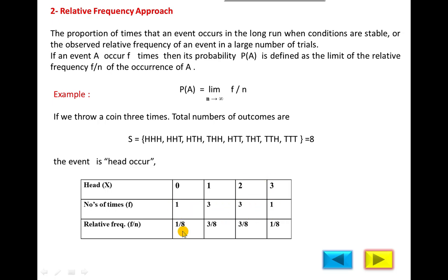If you divide the frequency by the total number of outcomes — 1+3+3+1 = 8 — you get the relative frequency or probability: 1/8, 3/8, 3/8, and 1/8. So the probability of zero heads is 1/8, one head is 3/8, two heads is 3/8, and three heads is 1/8. This is the relative frequency approach, using frequency for probability.